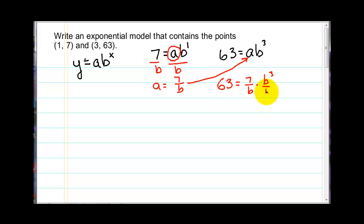I'm just going to put this over 1. So we would be multiplying here. So we get 63 equals 7b cubed over b. And we can use our exponent properties to simplify here. We're going to subtract the exponents. So we get 63 equals 7b squared.